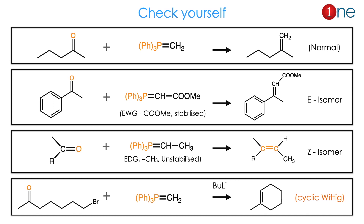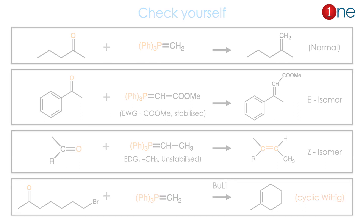The final important point is cyclic Wittig — the reaction is also possible in a cyclic system. It can undergo cyclization because the cyclic product is more stable than the linear product.